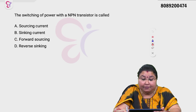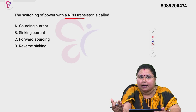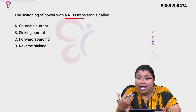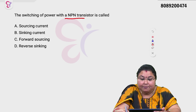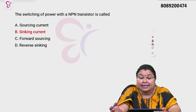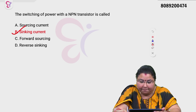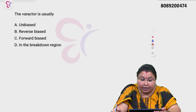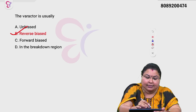The switching of power with the NPN transistor — NPN transistors are very important. The varactor is usually reverse biased. The correct answer is reverse biased.